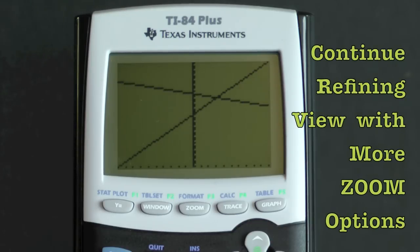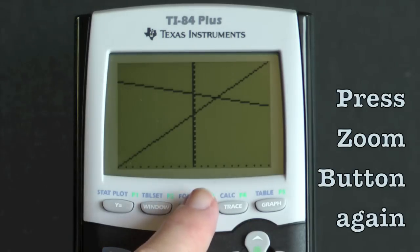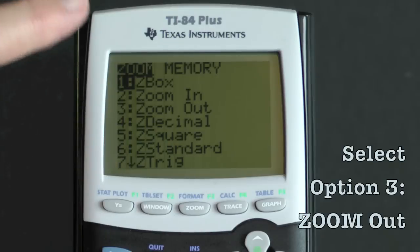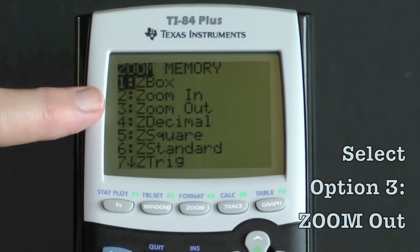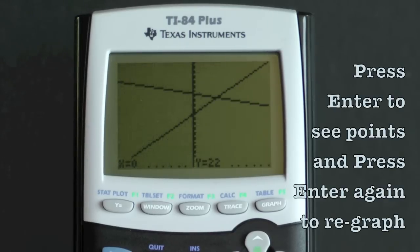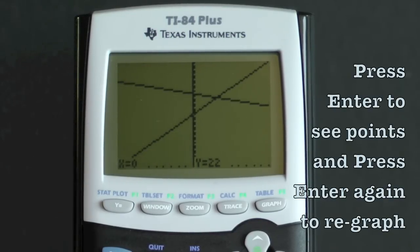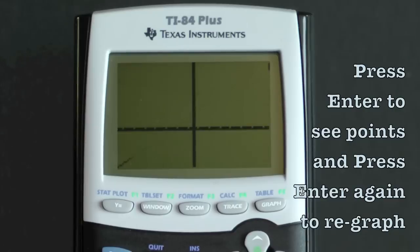Maybe though you would like to zoom out a little in order to see the x and y axis. Press the zoom button again and select zoom out option 3. When the screen comes up and the x and y values are suggested, press enter and it will redraw the graph further out.